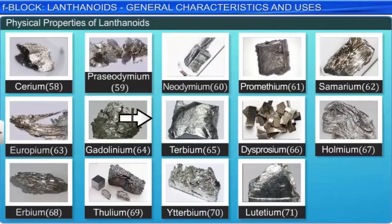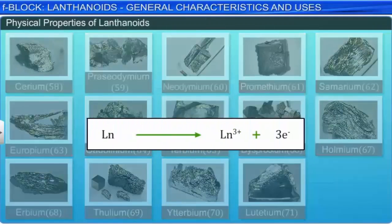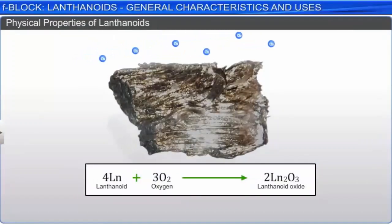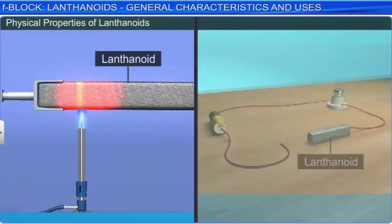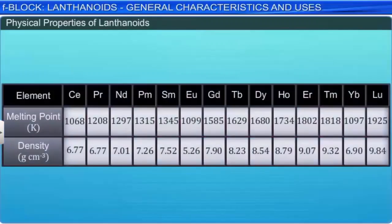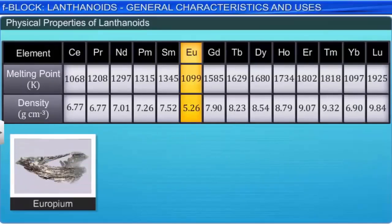The hardness of these metals increases with an increase in atomic number. They are electropositive and therefore very reactive. They rapidly tarnish in air due to the formation of an oxide coating on their surface. They are good conductors of heat and electricity. Their physical constants like melting point and density change gradually, except in the case of europium, terbium, samarium, and thulium.